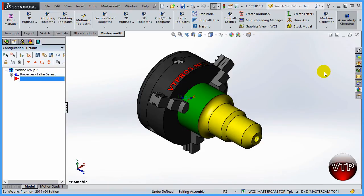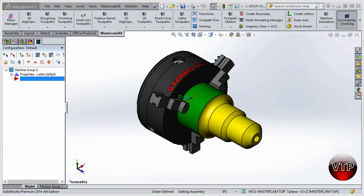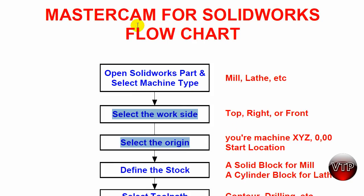Welcome back. In this video we're going to go through the second and third steps in our flowchart. Make sure you follow along with your flowchart because I follow it through every single exercise in this DVD. The second step is selecting the work side and the third one is selecting the origin. We've already opened up our part, set it up in our chuck jaw, and selected the machine type in our previous session.